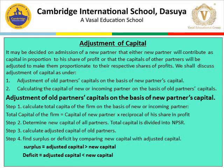Adjustment of capital: it may be decided on admission of a new partner that either the new partner will contribute capital in proportion to his share of profit, or that the capitals of other partners will be adjusted to make them proportionate to their respective shares of profits. There are two approaches: (1) adjustment of old partners' capital on the basis of new partner's capital, and (2) calculating the capital of new or incoming partner on the basis of old partners' capital.